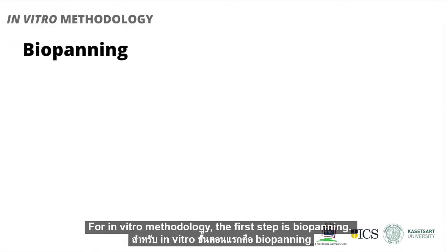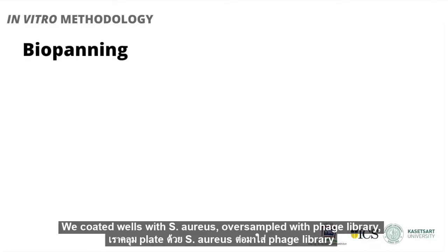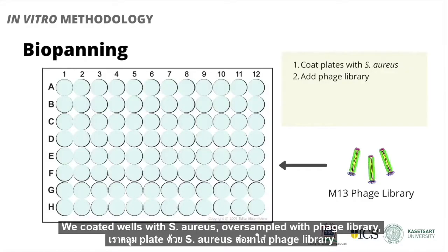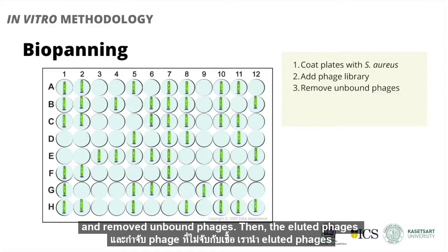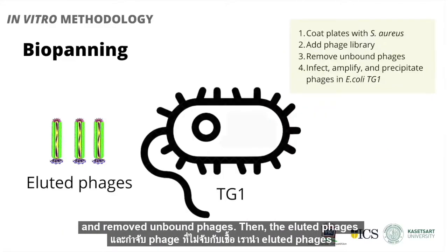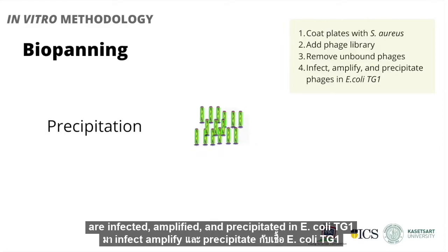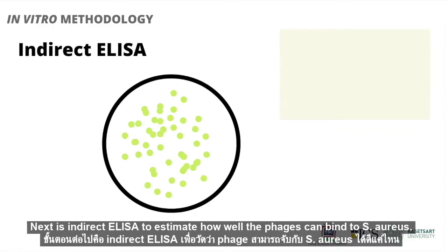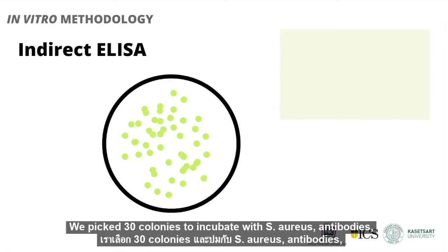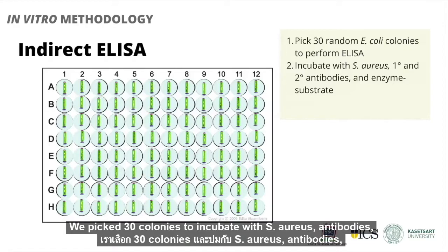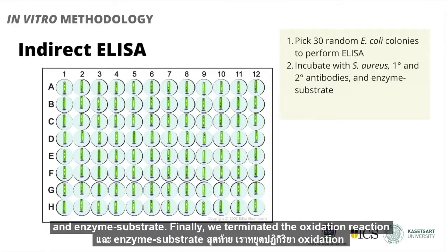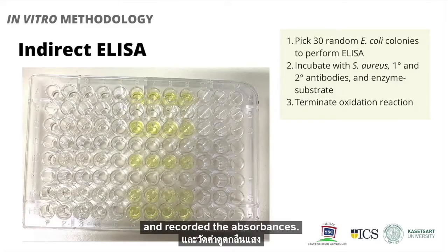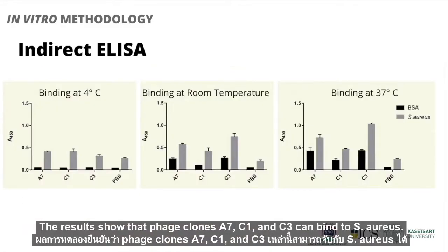For in vitro methodology, the first step is biopanning. We coated plates with S. aureus, oversampled with phage library, and removed unbound phages. Then the eluted phages are infected, amplified, and precipitated in E. coli TG1. Next is indirect ELISA, to estimate how well the phages can bind to S. aureus. We picked 30 colonies to incubate with S. aureus, antibodies, and the enzyme substrate. Finally, we terminated the oxidation reaction and recorded the absorbances. The results show that phage clones A7, C1, and C3 can bind to S. aureus.